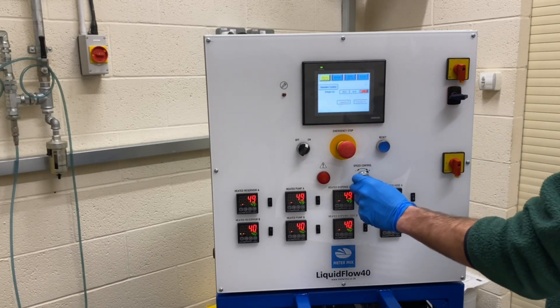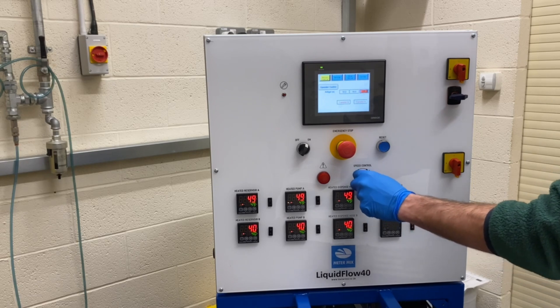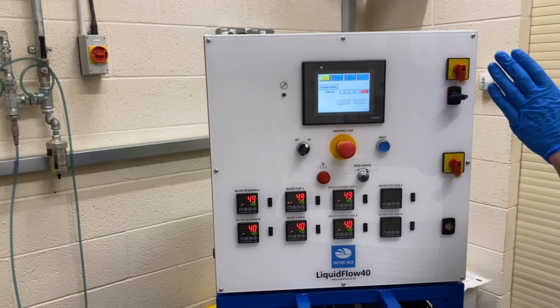The potentiometer is what controls the flow rate or the speed that you're actually dispensing material at. This can be done with this dial or you can set it in the screen with a time shot.